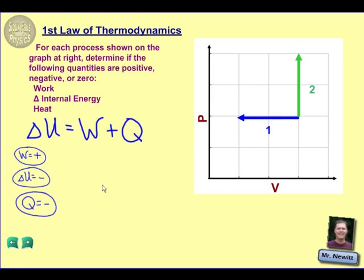Let's look at the second process now. This one's a little bit different because our pressure is changing, but our volume is staying constant. Let's first look at the work being done here. Work is equal to the area under the graph. If I have a vertical graph here, I do not have an area under it. So because volume is staying constant, the work being done is zero — no work is done as a result of this process.